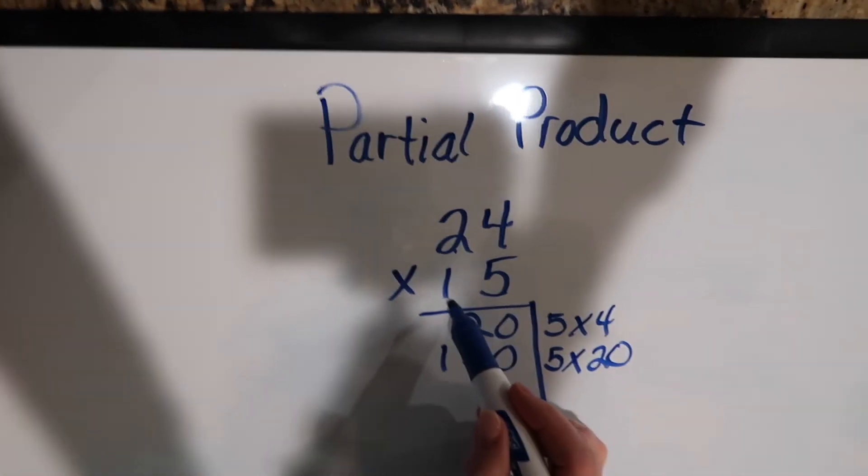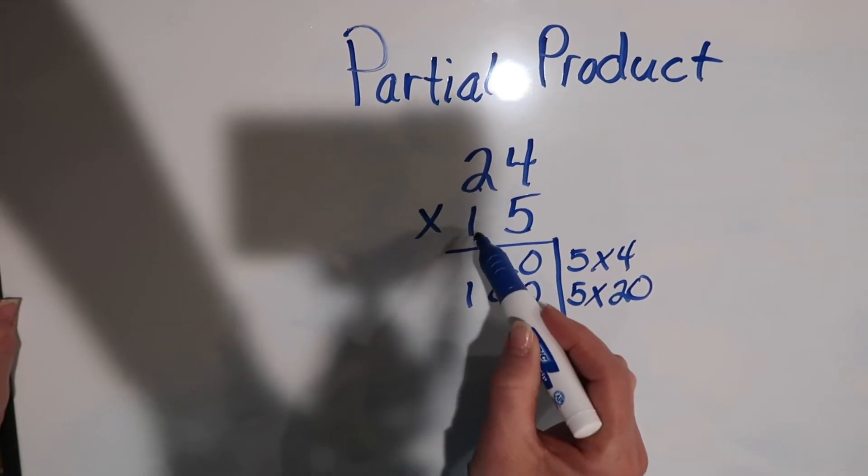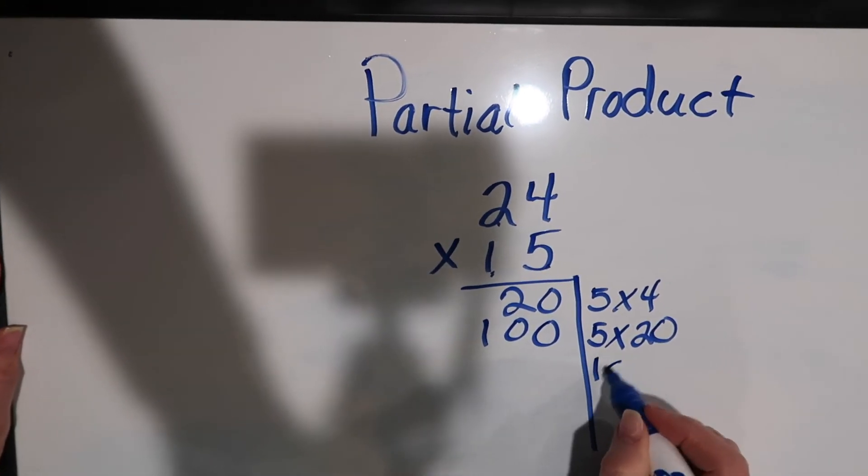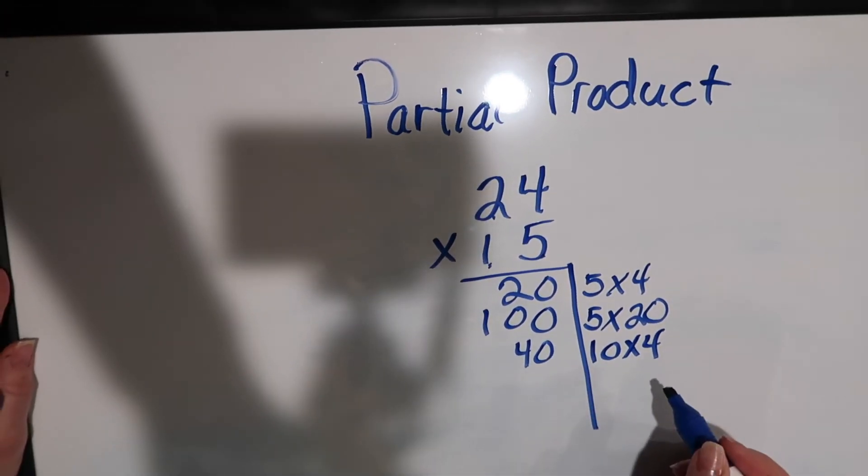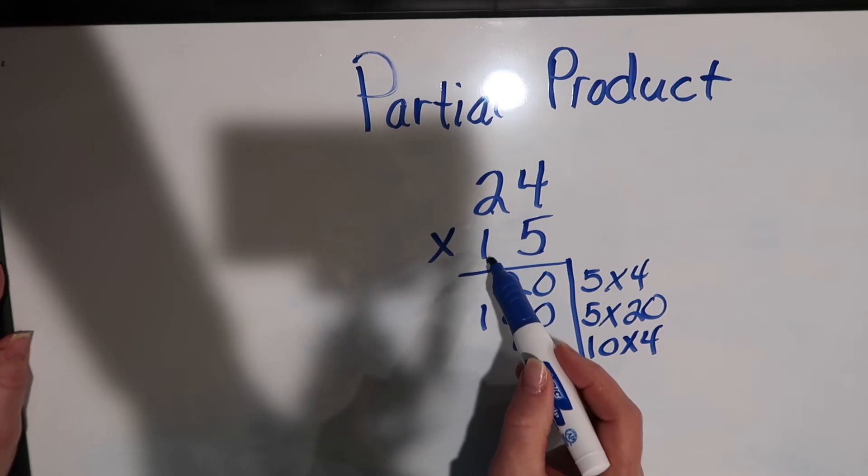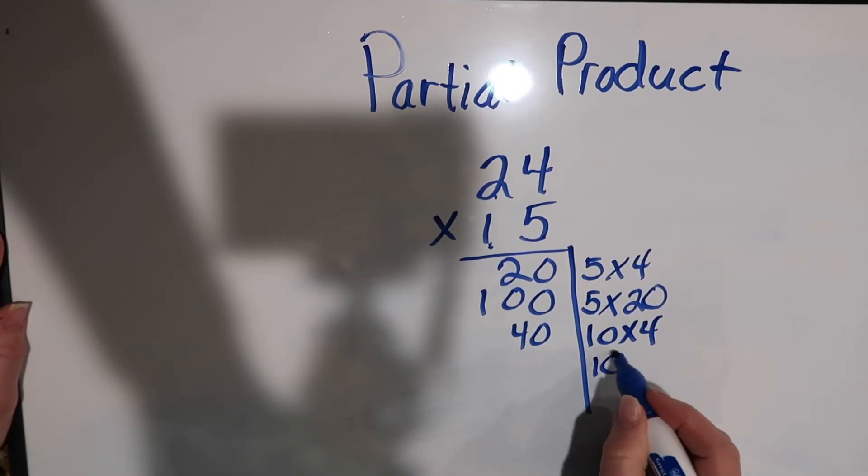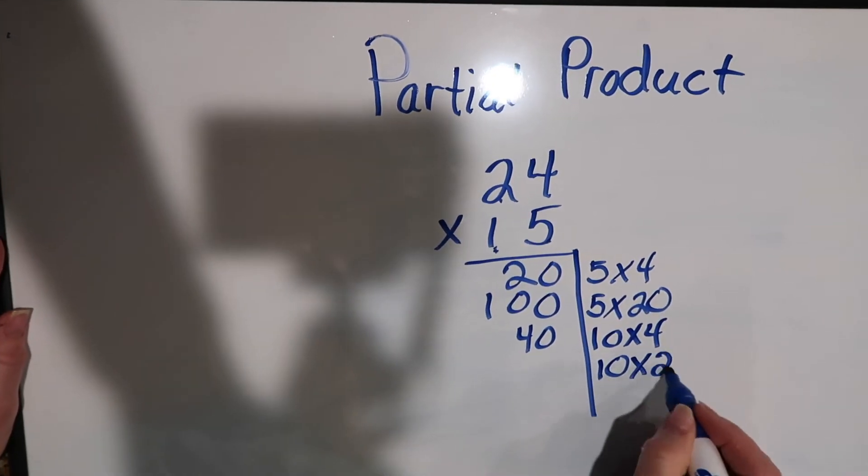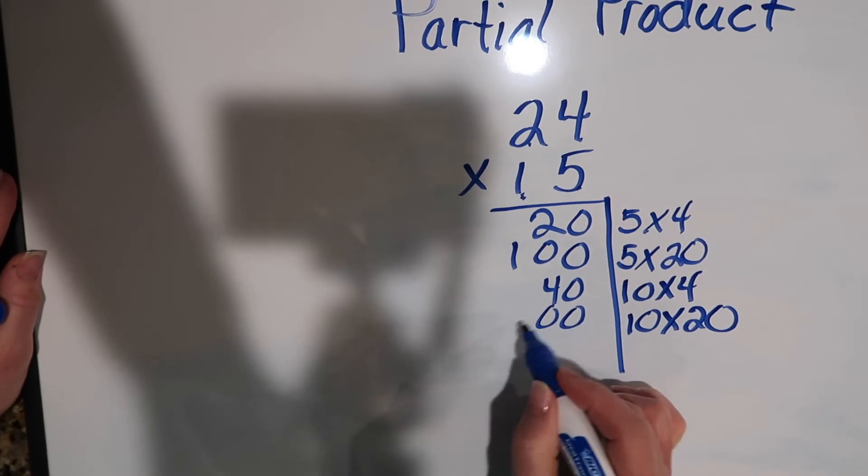Then we're going to start on this side and go 10, because even though there's a 1 there, that's in the tens column, times 4. And 10 times 4 is 40. And then we're also going to go back into the tens column. We have one 10 here, times 2 tens, which is 20, and 10 times 20 is 200.